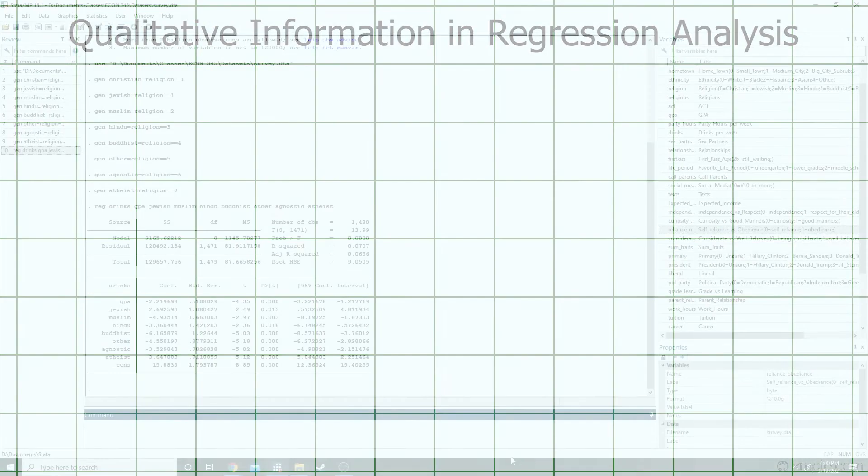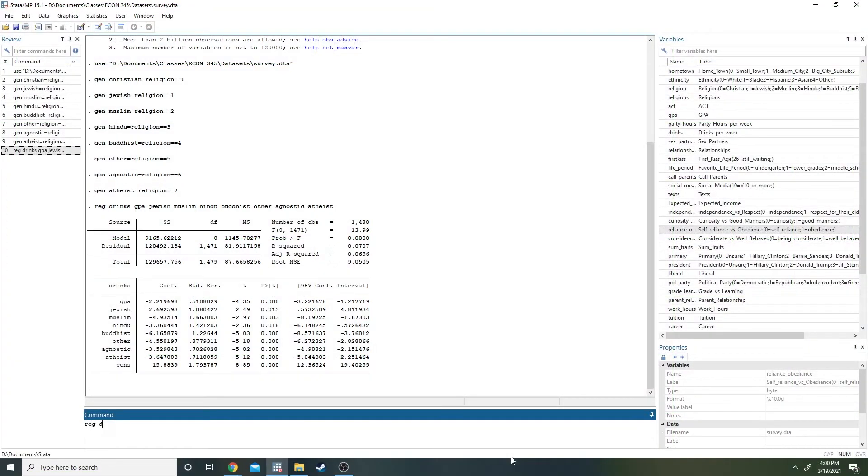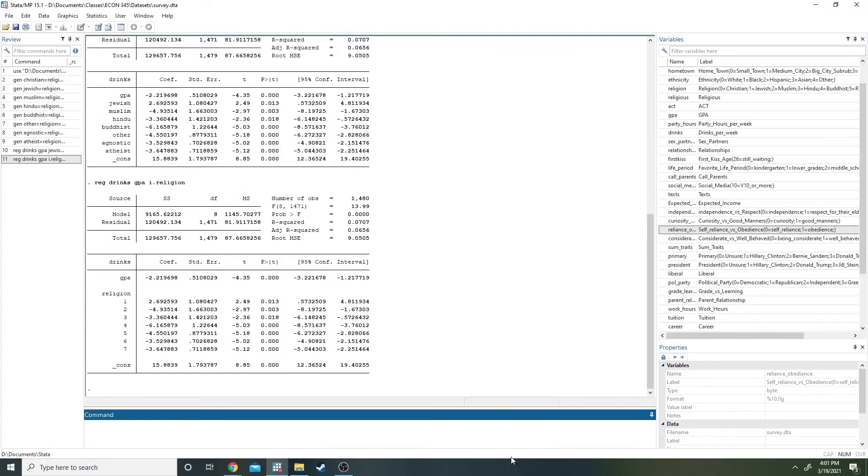To create a matrix of binary variables from a coded variable like this quickly, we can put an i and a period in front of our religion variable in a regress command, and Stata will automatically create an indicator value for every value of the variable. It's even smart enough to drop one of the variables in order to avoid perfect collinearity.